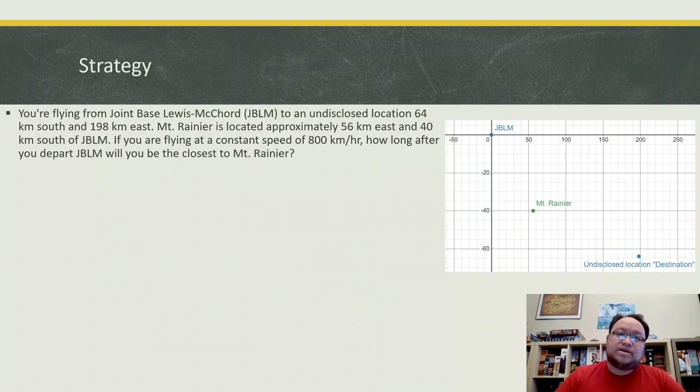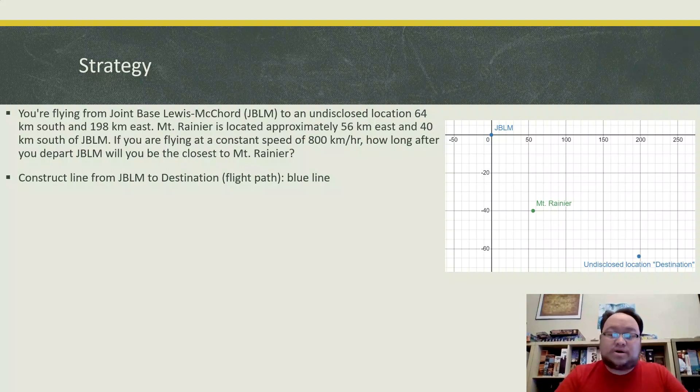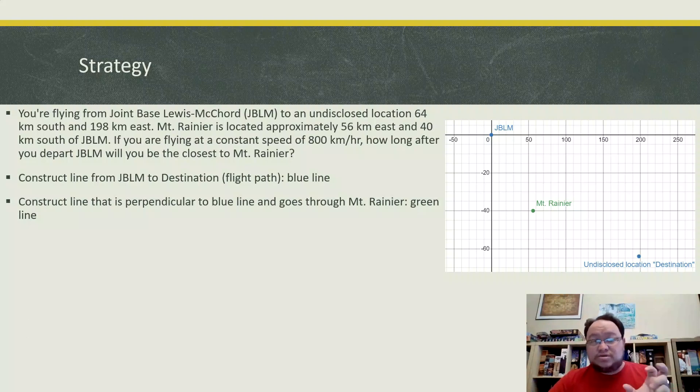What we need to do is construct a line so that we know what our flight path looks like here. I'm going to call that the blue line because it's connecting the blue coordinates together. And then we need to figure out what the line that's perpendicular to the flight path, to the blue line is, which is going to be a green line because it'll have to go through the green point there. This will help establish the shortest distance since it is perpendicular to that line.